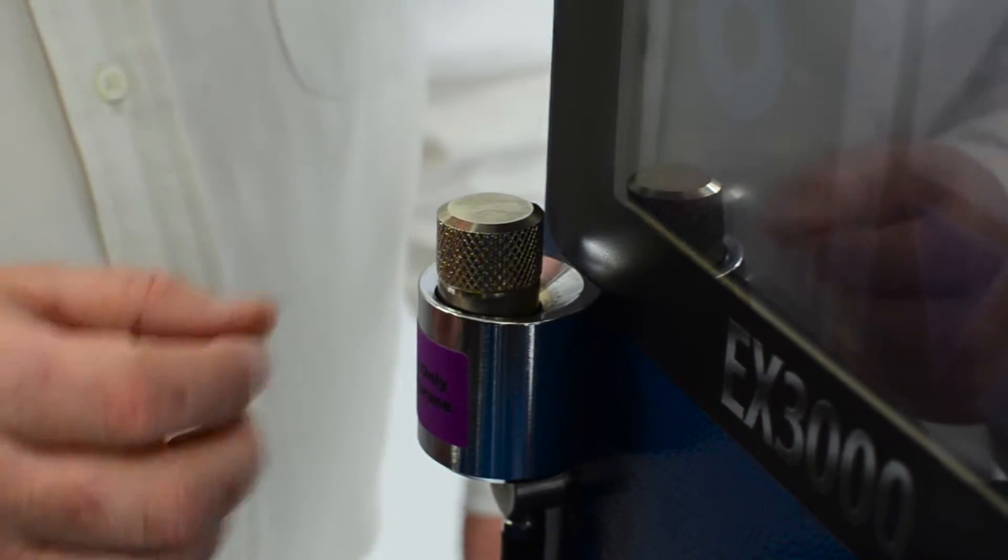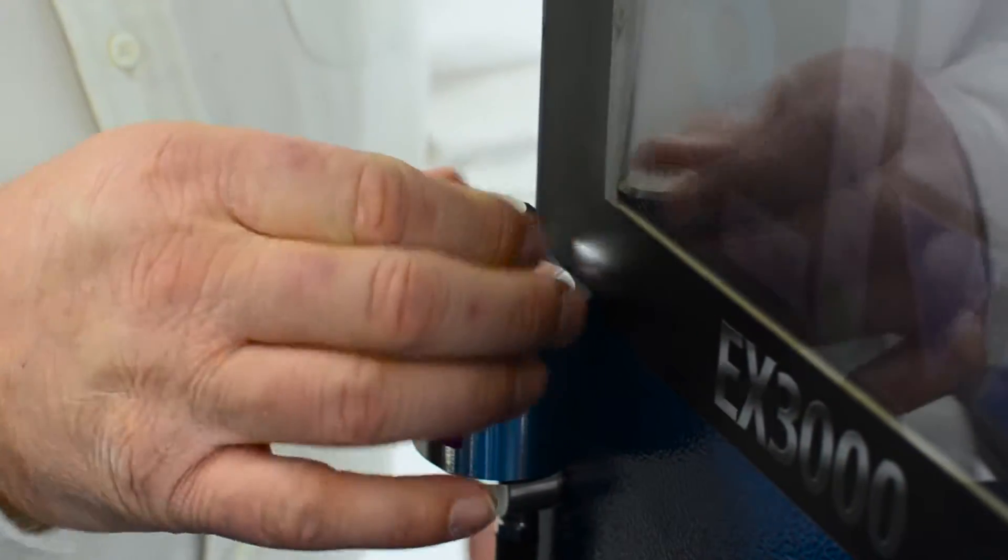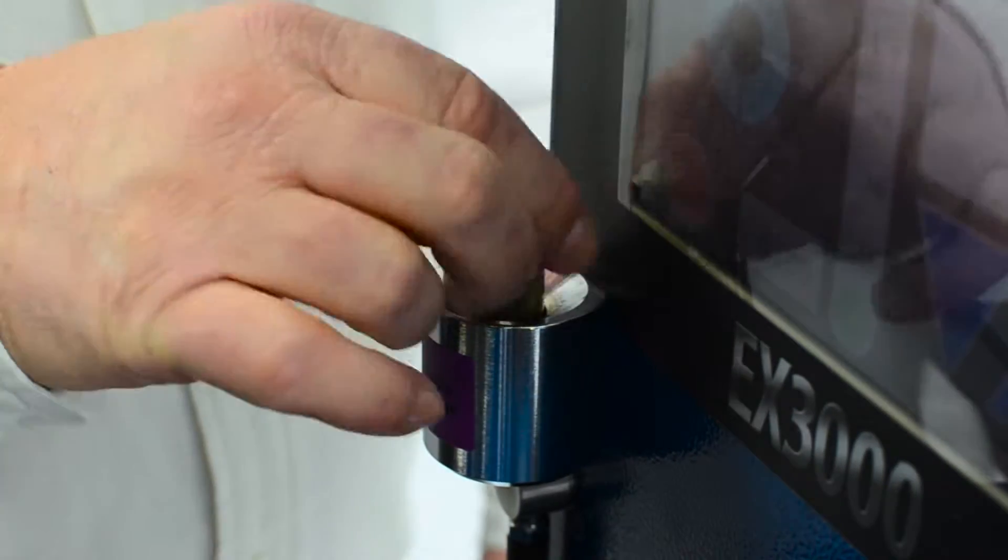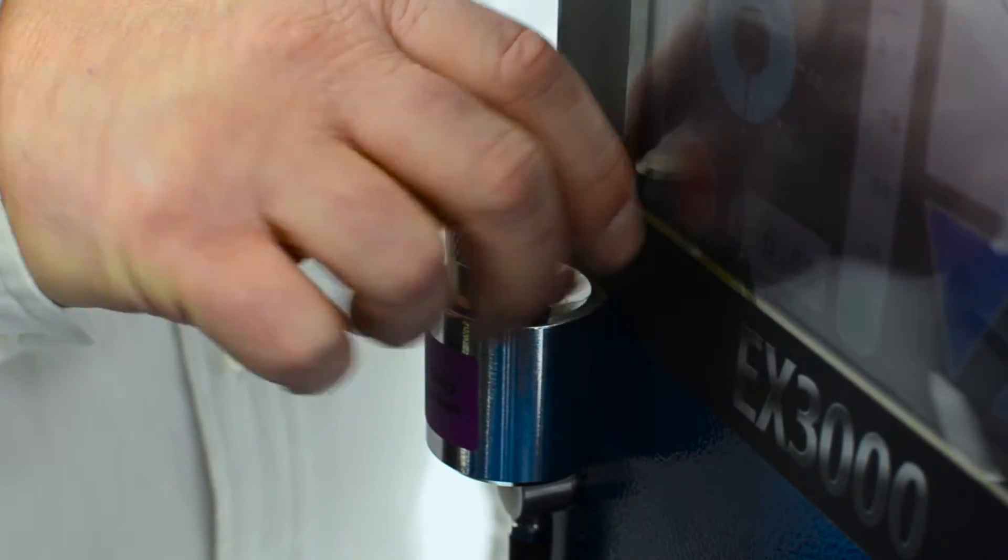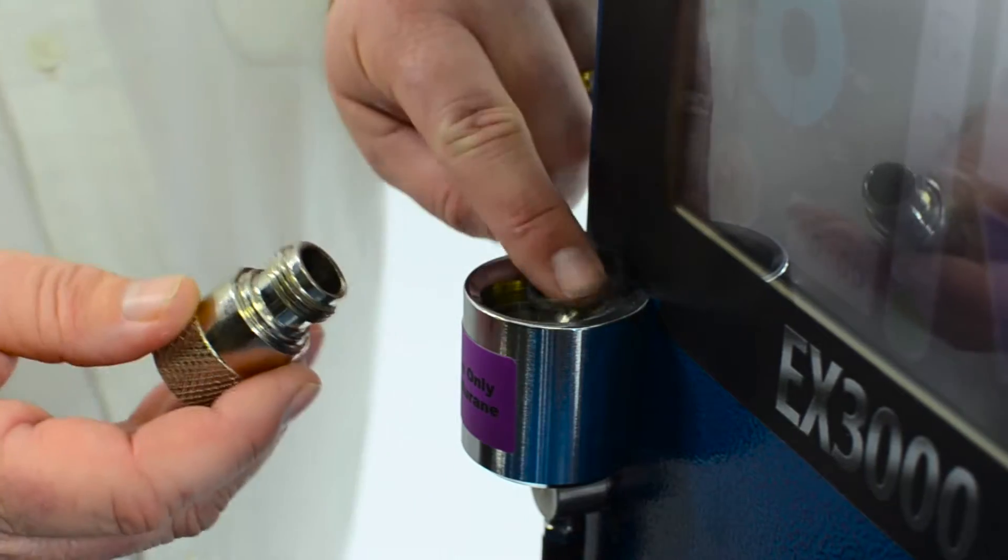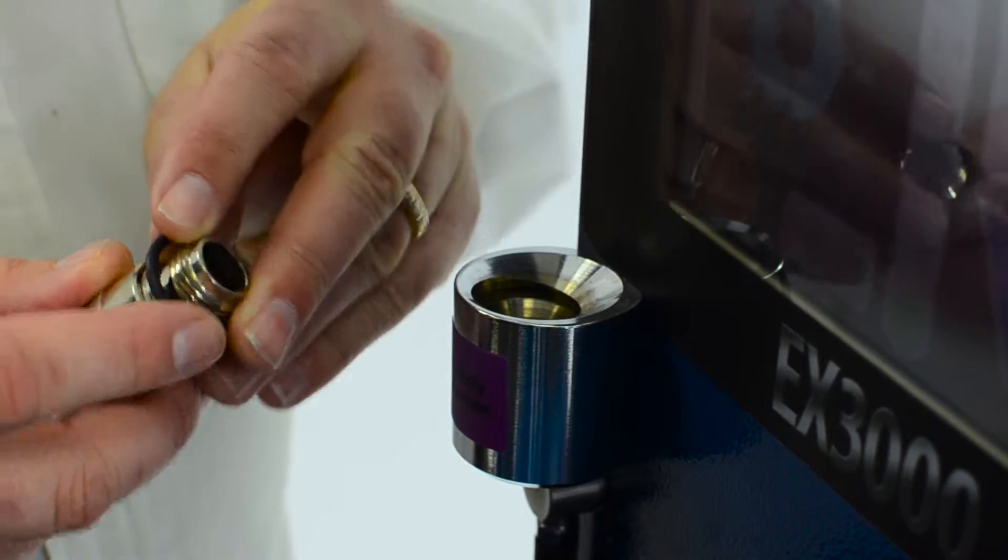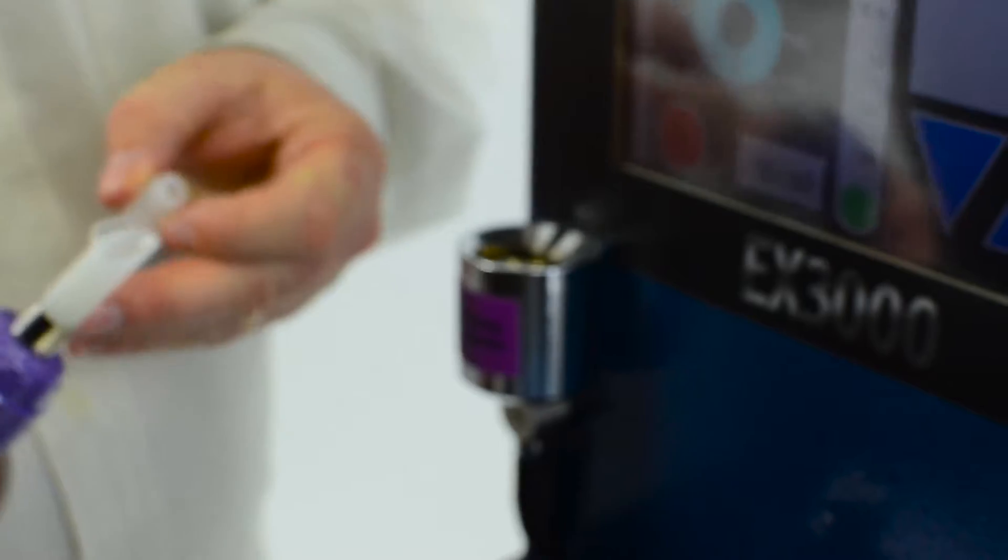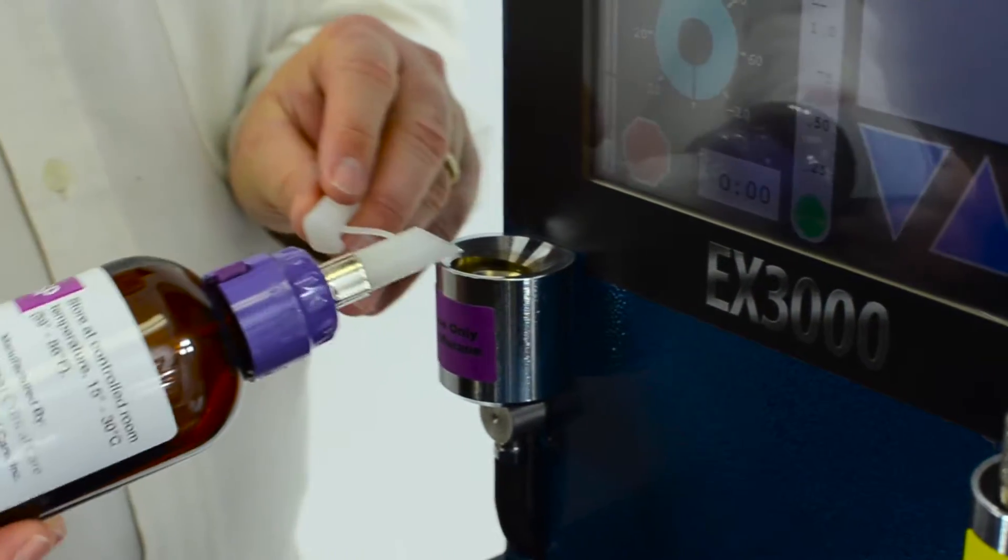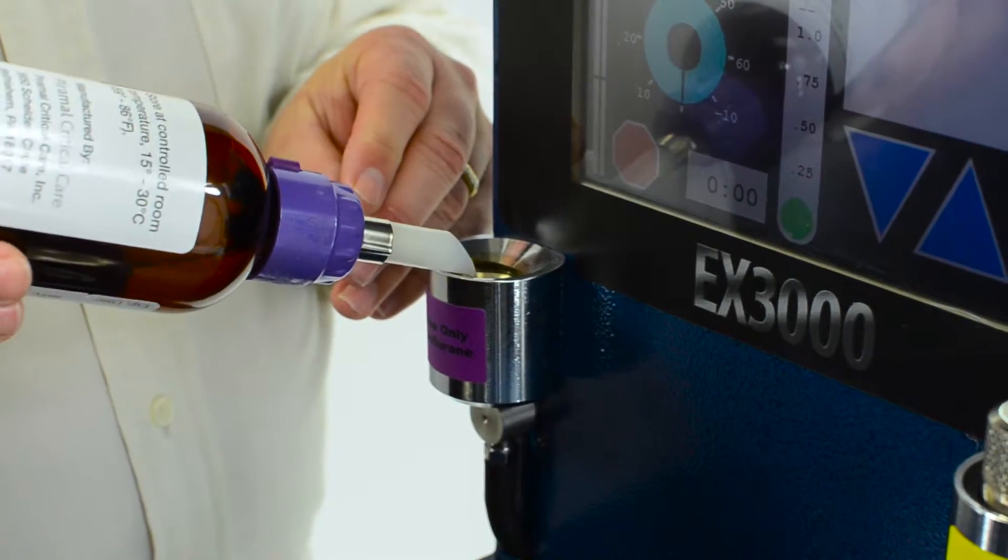To fill the isoflurane vaporizer you'll just unscrew the plug here. Remove the plug and there's an o-ring that's the seal. Make sure you don't lose it. And we'll take our anesthetic and pour it into the funnel.